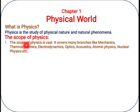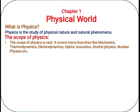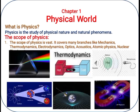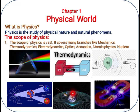The scope of physics means what type of branches or how many branches come under physics. The branches include mechanics, thermodynamics, electrodynamics, acoustics, atomic physics, nuclear physics, optics, gravitation, and electromagnetic theory. All these branches come under physics.